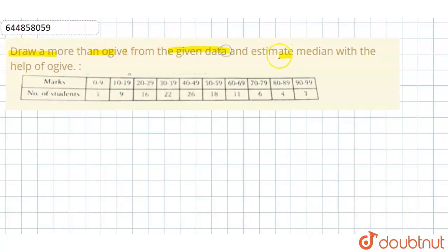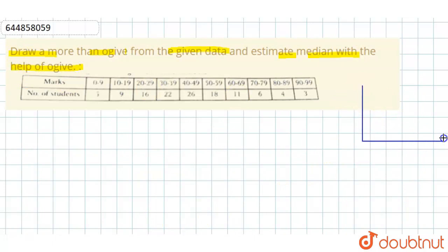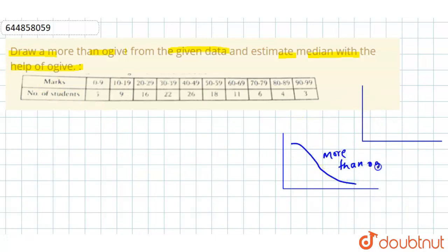Today our question is: draw a more-than ogive from the given data and estimate the median with the help of the ogive. We know that the falling curve denotes the more-than ogive, and the rising curve denotes the less-than ogive.